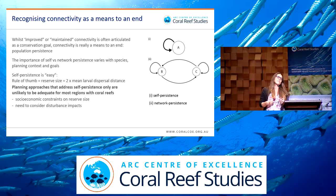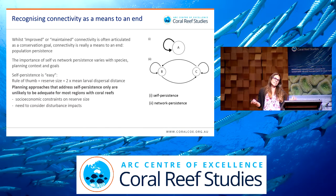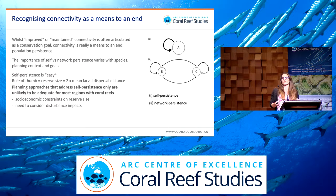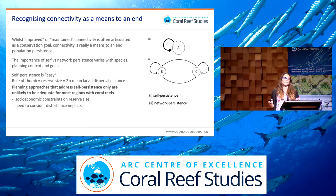The first pathway is self-persistence: if there's sufficient local retention of larvae returning to that site, the population can replenish itself. The second is network persistence, where even if no individual site is self-persistent, reserves within a network might exchange sufficient larvae between them to offset shortfalls in local retention, and the population will persist within the network. Self-persistence is conceptually straightforward — a rule of thumb is that if reserves are twice the size of the mean larval dispersal distance for a species, that species can likely persist within that reserve.